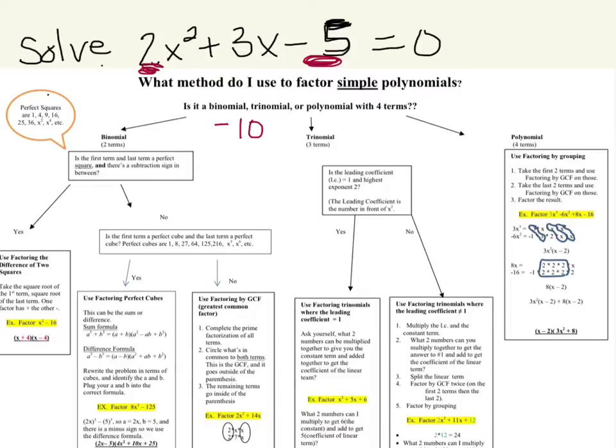So those two numbers are positive 5 and negative 2. Those are the two numbers we can multiply together to give us negative 10, and when we add them together gives us a positive 3.